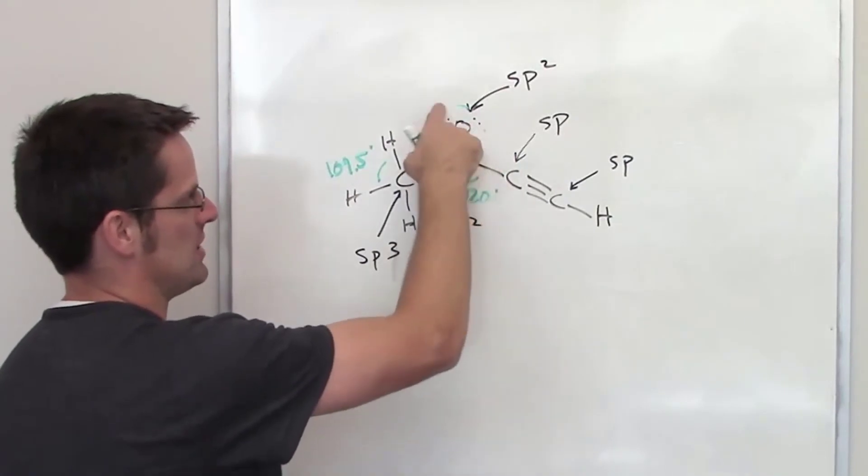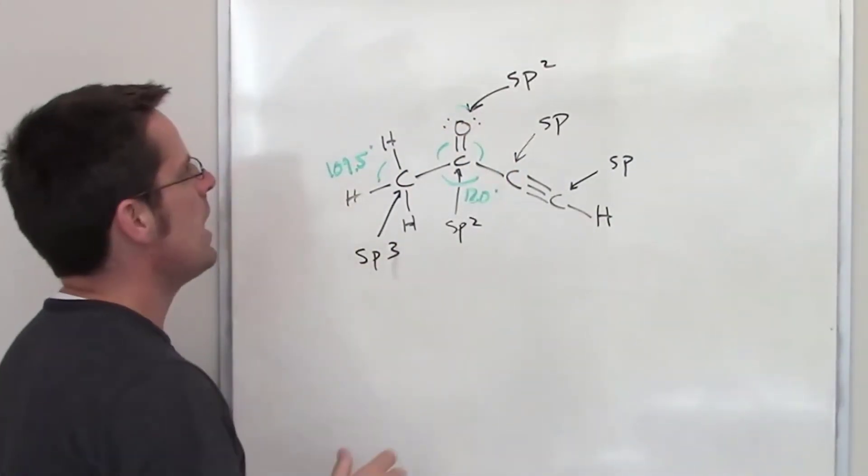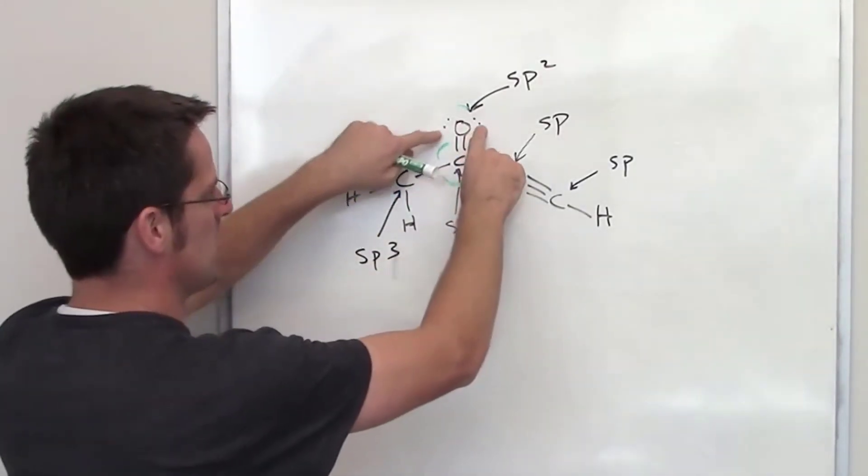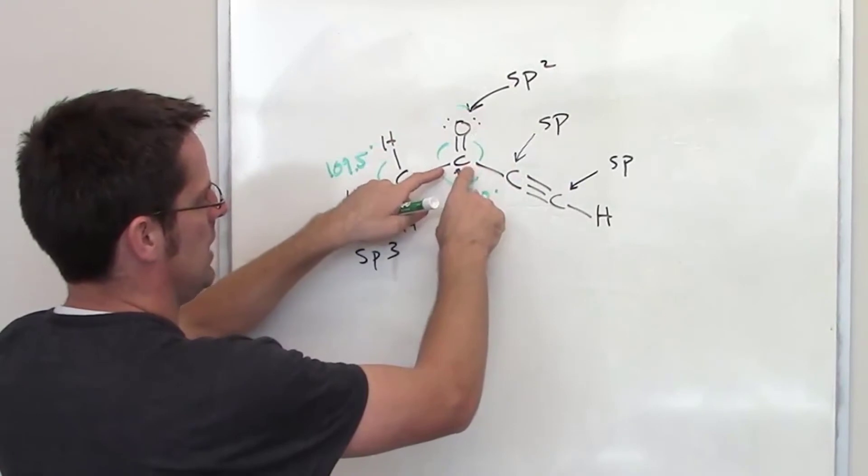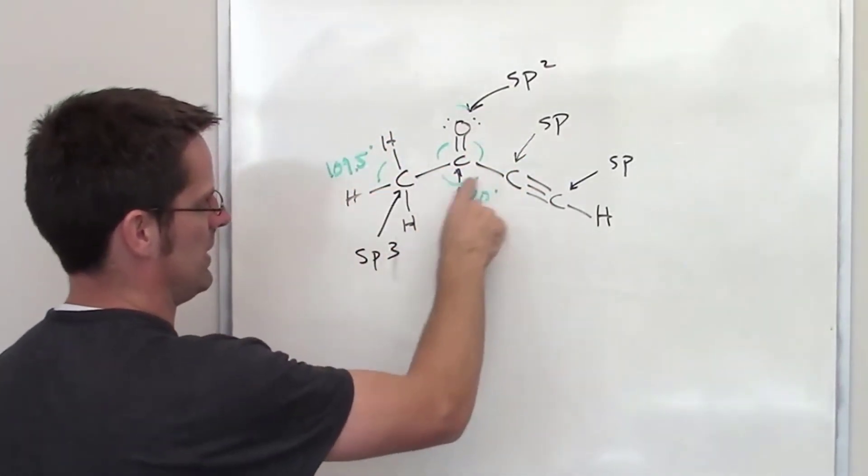of this carbon, each of these sets of lone pairs around that oxygen. Now, for reasons I've discussed elsewhere, the lone pairs take up a little bit more room. So the angle between each of these lone pairs and these groups is going to be a little bit bigger. The angle down here is actually a little bit smaller than 120,